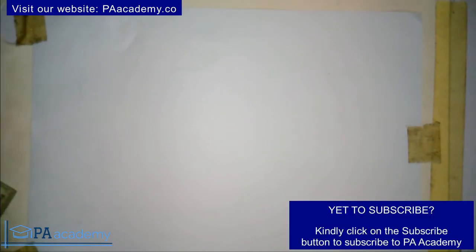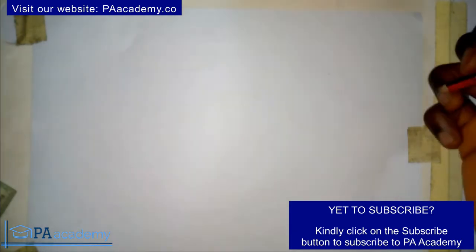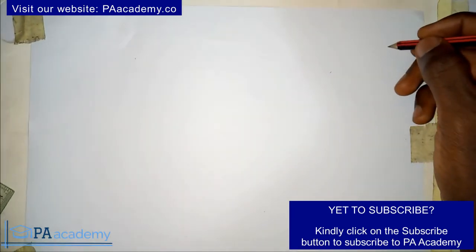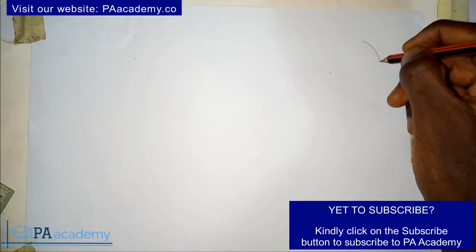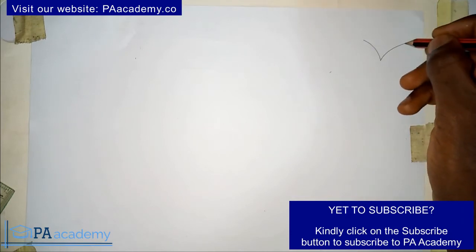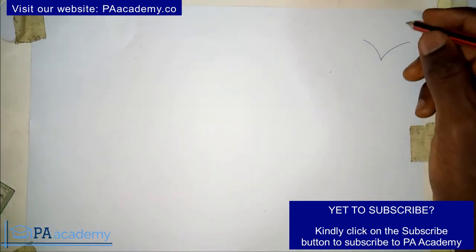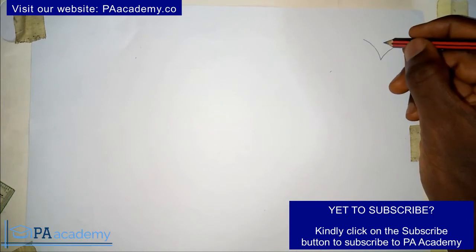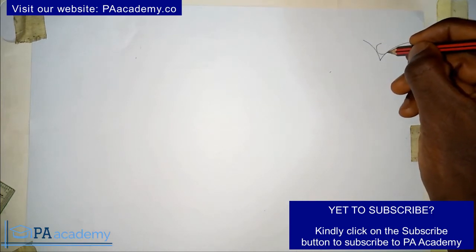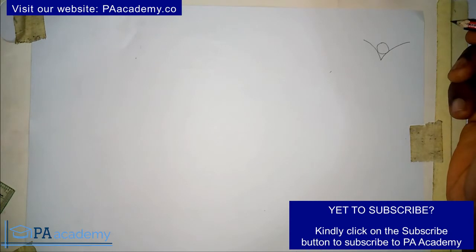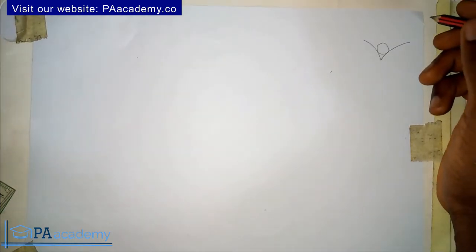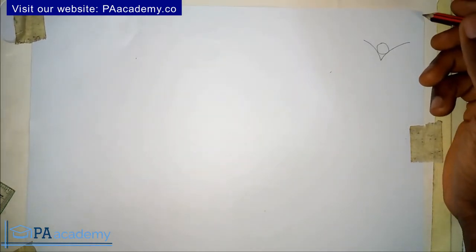Hello everyone, welcome to PA Academy. In this video I'm going to be showing you how to draw a circle with a given radius to touch two arcs. If you have two arcs like this, you are asked to draw a circle with a given radius such that the circle will touch the two arcs. You're going to have something like this — this is a freehand sketch, it might look easy, but you need to understand the steps on how to go about it.